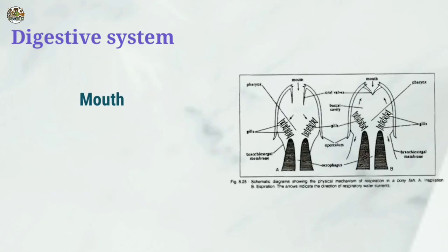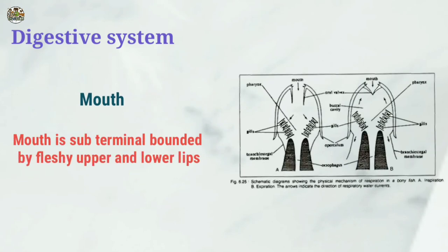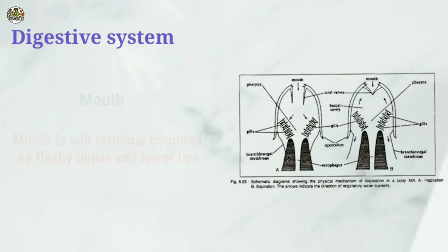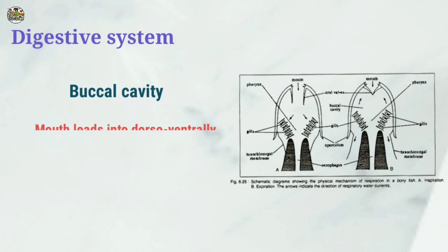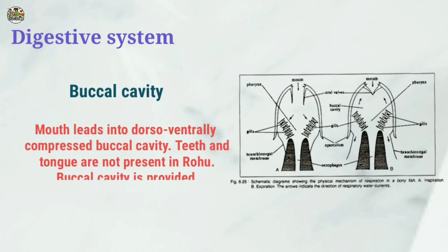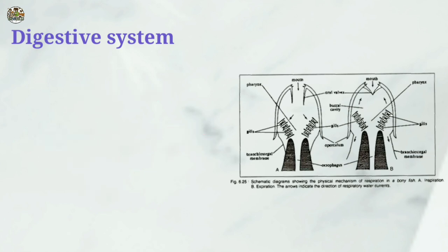The mouth is sub-terminal, bounded by fleshy upper and lower lips. The mouth leads into a broad, dorsoventrally compressed buccal cavity. Teeth and tongue are not present in Rohu. The buccal cavity is provided with thick muscles.